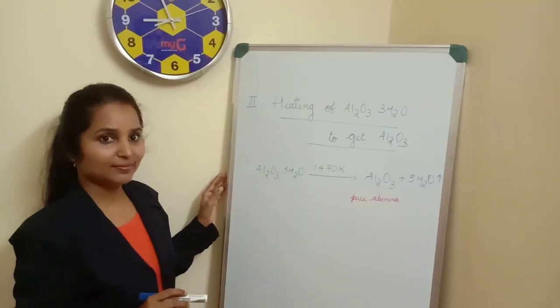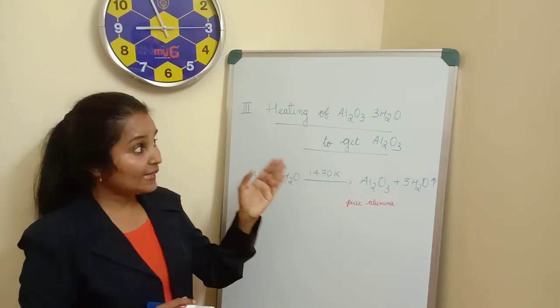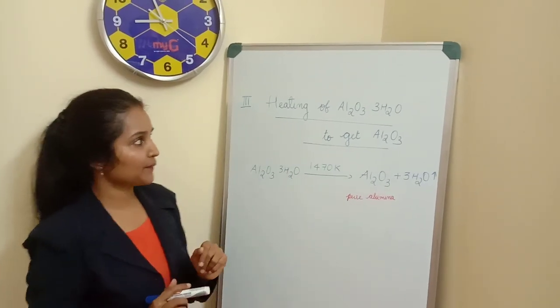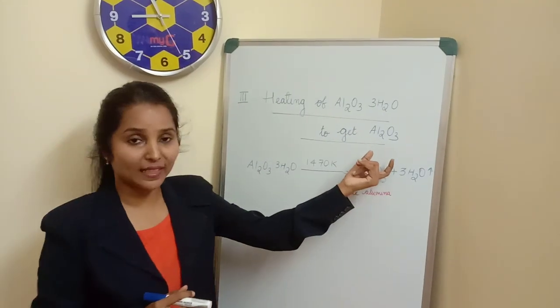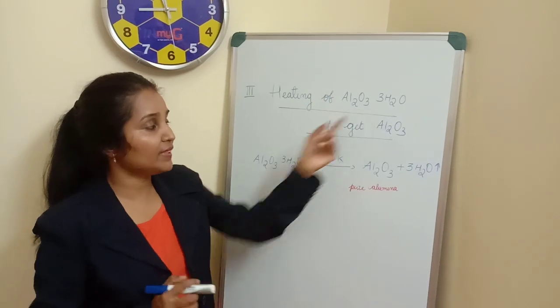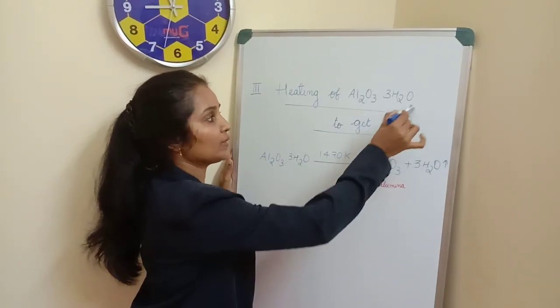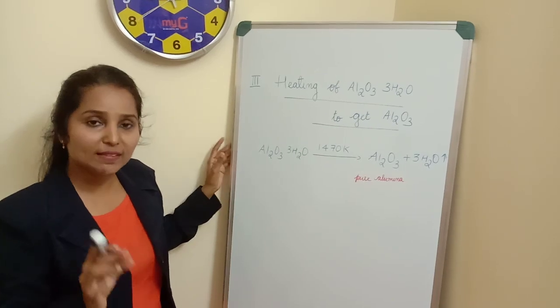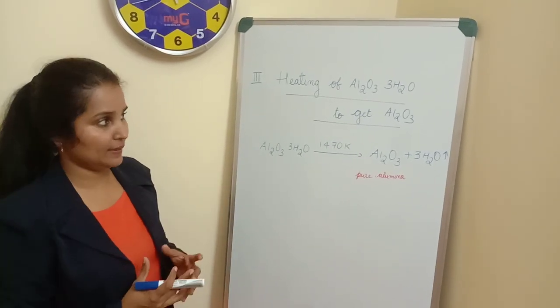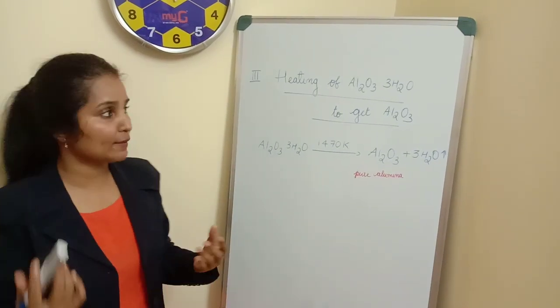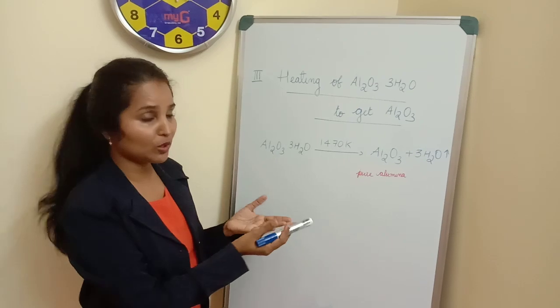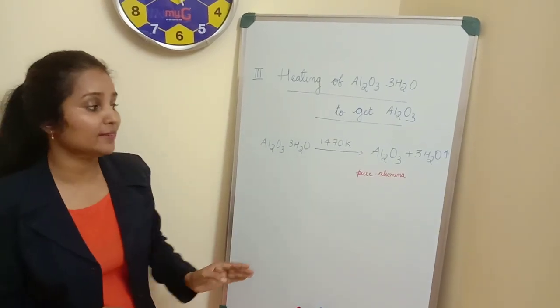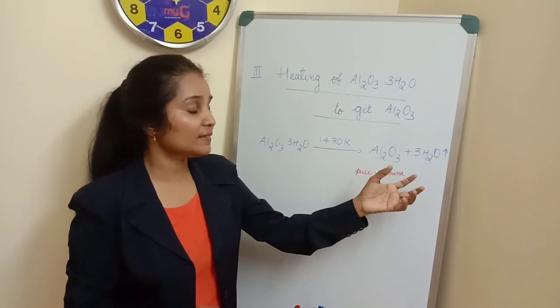The third step is heating of Al2O3·3H2O to get Al2O3, that is alumina. Why do we have to heat it? Because we need alumina Al2O3, and it is having three molecules of water of crystallization with it. That should be removed. You know that water can be removed by heating it, because when water is heated above 100 degrees Celsius, it gets evaporated and forms steam. So Al2O3·3H2O is heated at 1470 Kelvin to get pure alumina and the water will be evaporated.